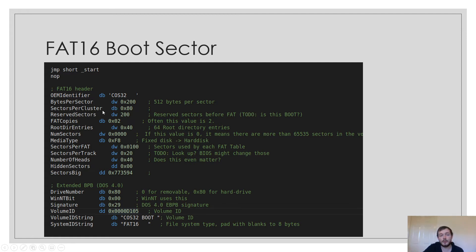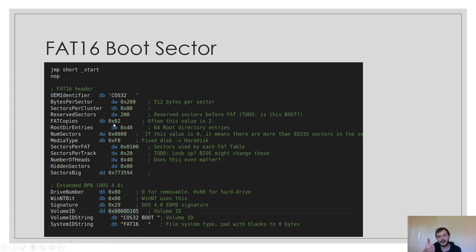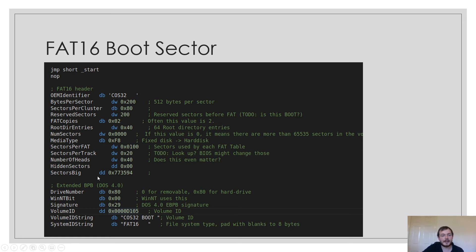The sectors per cluster field is important — this specifies how many sectors are in one cluster, which is where the file information is stored. Then we have our reserved sectors. In this implementation we have 200 reserved sectors — if you have a big kernel you'll need quite a lot of reserved sectors unless you plan to load the kernel from disk. We can also specify the amount of FAT copies; you can have one or a second one as a backup. Sectors per FAT is important — this is how many sectors are in the file allocation table itself. Fields like sectors per track and number of heads can be ignored.